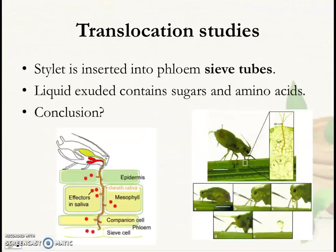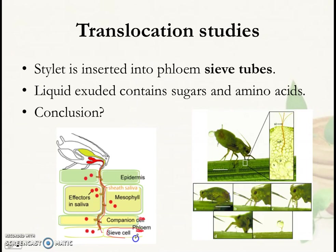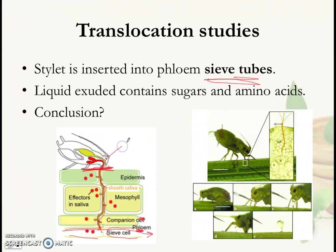The aphid inserts its stylet all the way into the phloem. The phloem is made up of two types of cells: the sieve cell and the companion cell. Sieve cells are joined together to form sieve tubes, and the transport of food actually takes place in the sieve tubes — not in the companion cells, which play a different function. Scientists found that when they cut off the aphid stylet and examined the fluid, it contains sugars and amino acids.